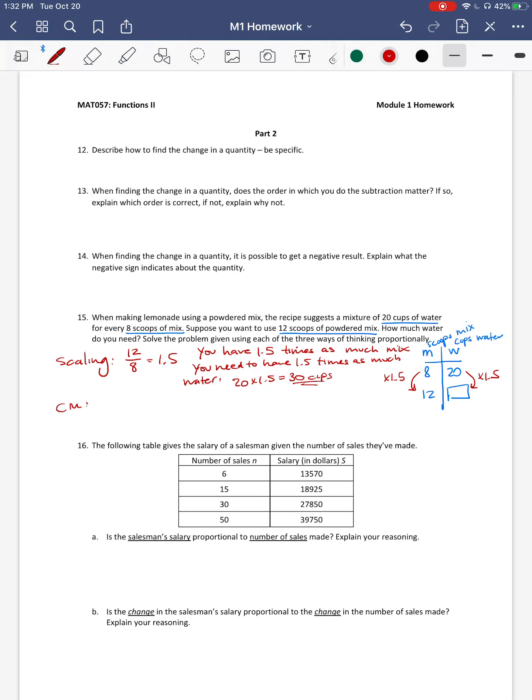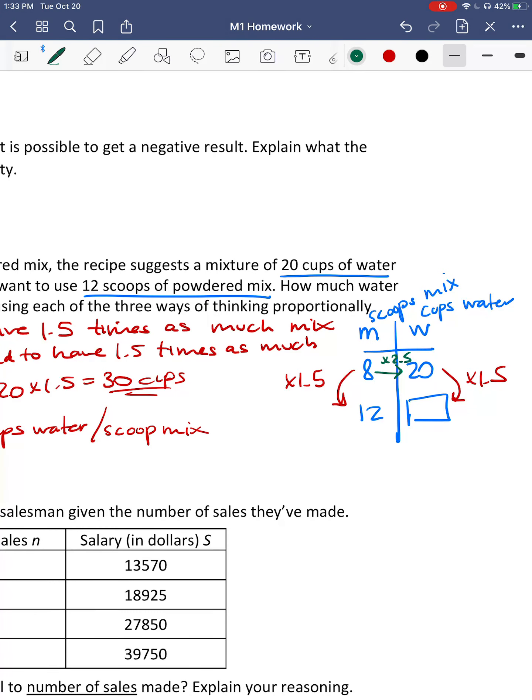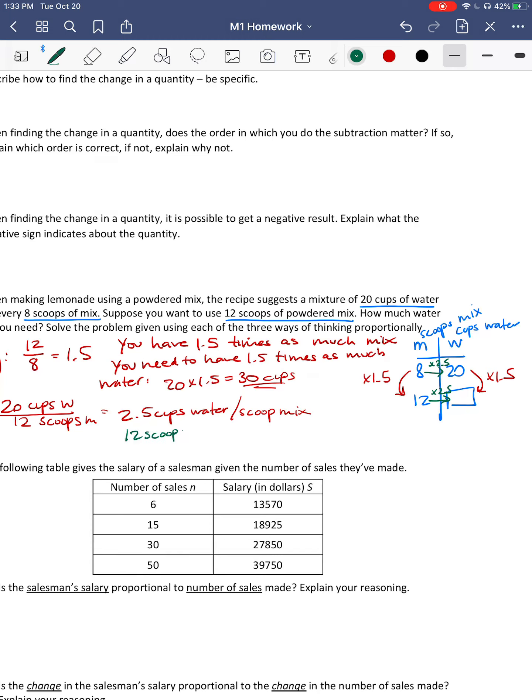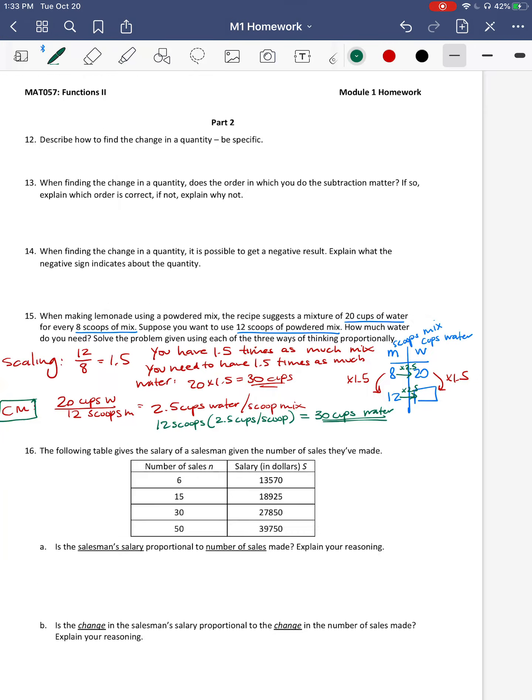If we did the constant multiple, that would be looking at my unit rate. And so that'd be saying, okay, I'm going to say that I first need to find the rate. So I do 20 cups of water over 8 scoops of mix. And so then you're going to get 2.5 cups of water per scoop of mix. And so essentially what we're getting right here. We'd say this right here is 2.5 times as large. Because it's 2.5 cups of water per scoop. Now I have 12 scoops times 2.5 cups of water per scoop. And it's going to get me 30 cups of water. Again, we get the same thing, just a different way of reasoning.